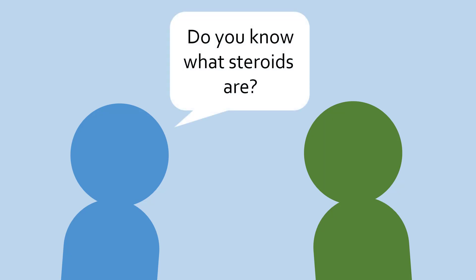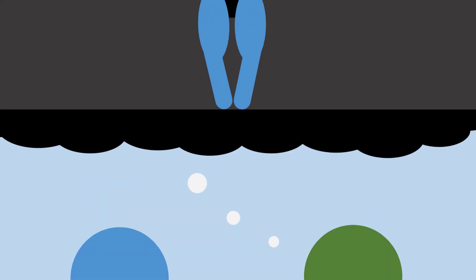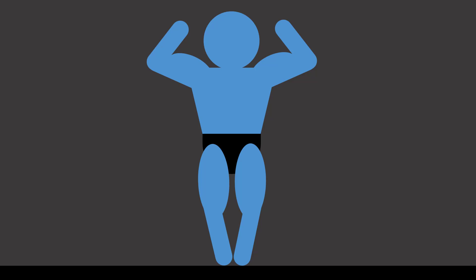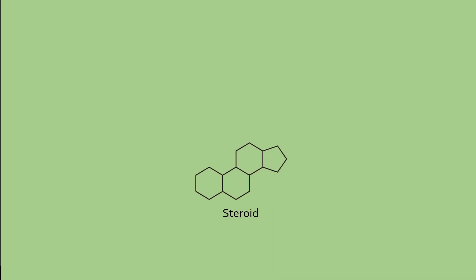If you ask someone to think of steroids, they'll probably think of this. But in science, the term steroid is used to describe molecules consisting of four rings arranged in a specific orientation, like this.